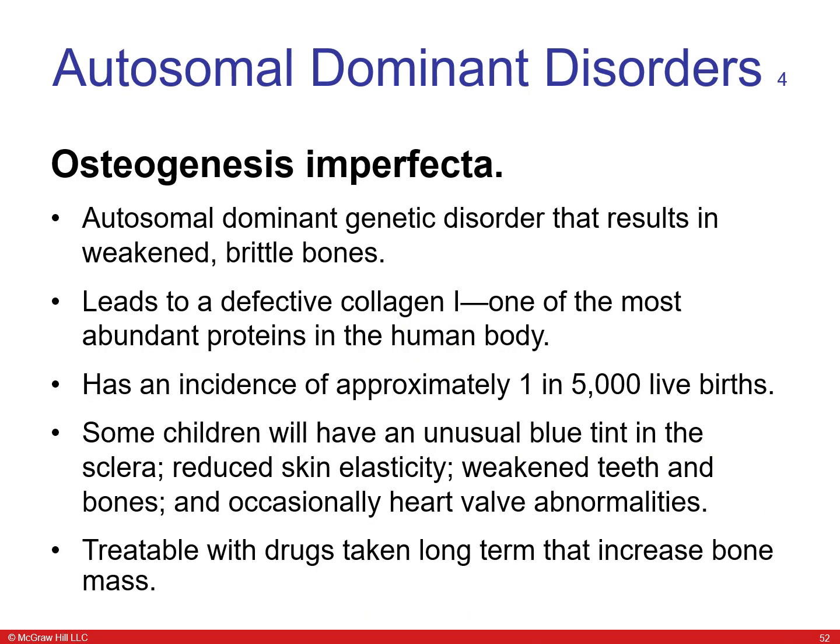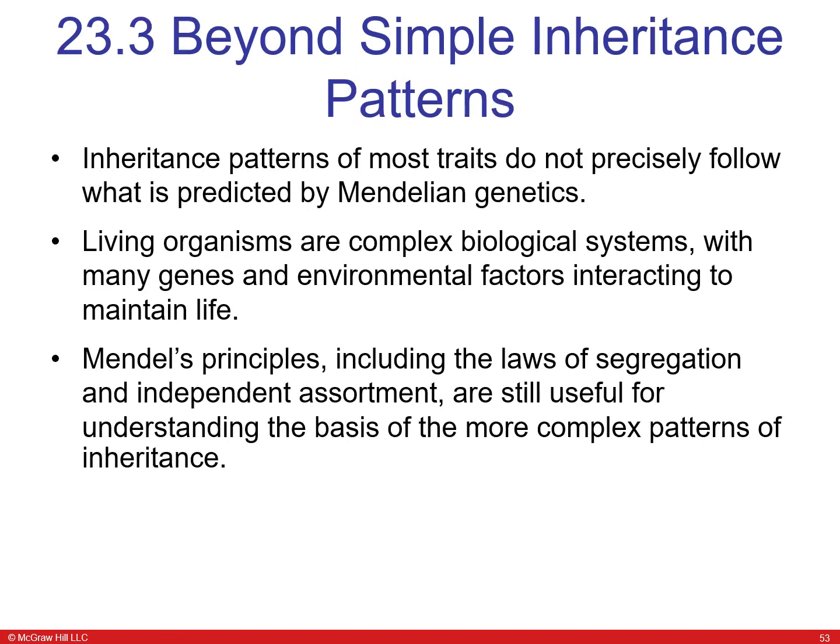Osteogenesis imperfecta is another autosomal dominant disorder that usually results from collagen mutations, causing weakened brittle bones, skin elasticity issues, and weakened teeth. It is treatable with long-term drugs to increase bone mass. These are simple inheritance patterns that follow Mendelian genetics, but there are many other diseases that do not follow these simple patterns.